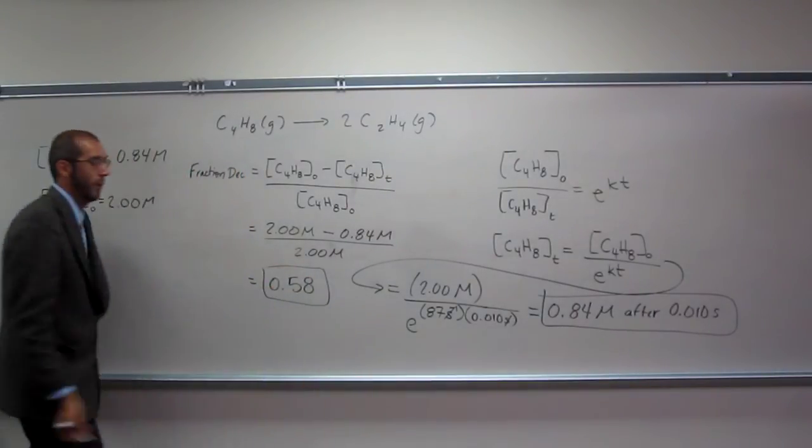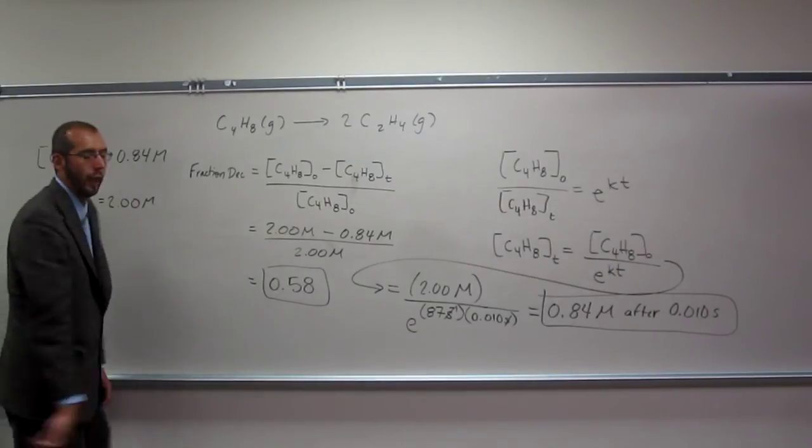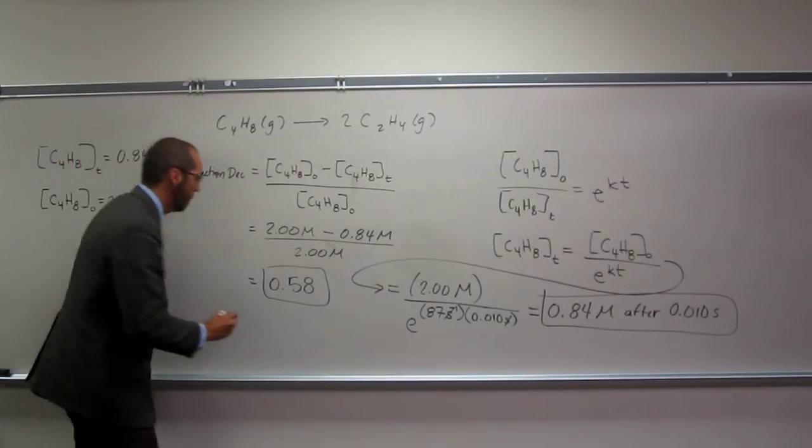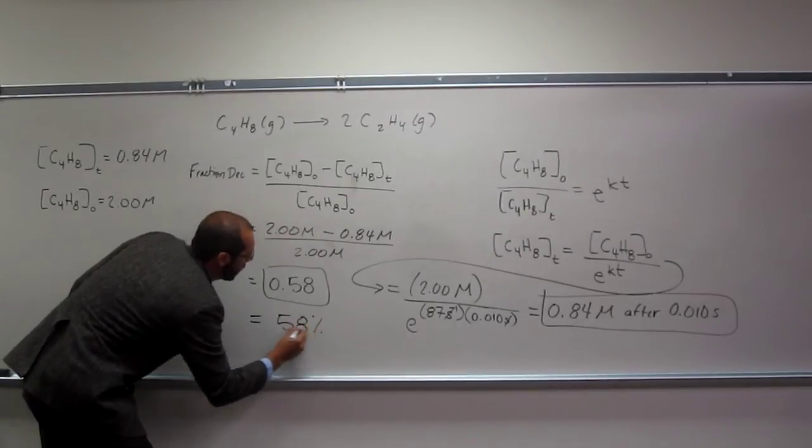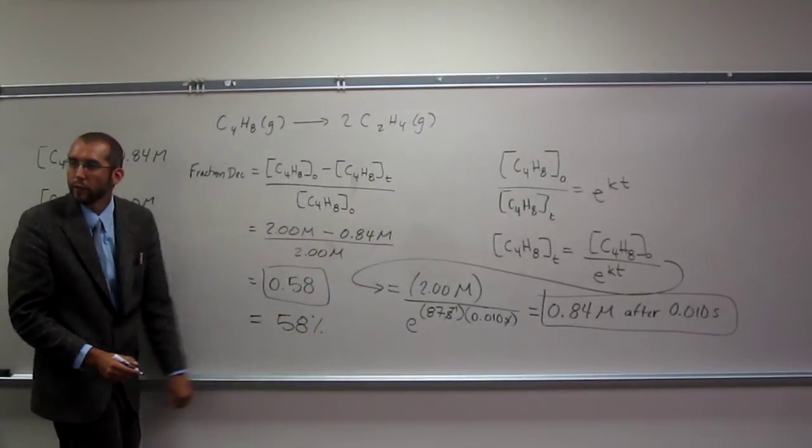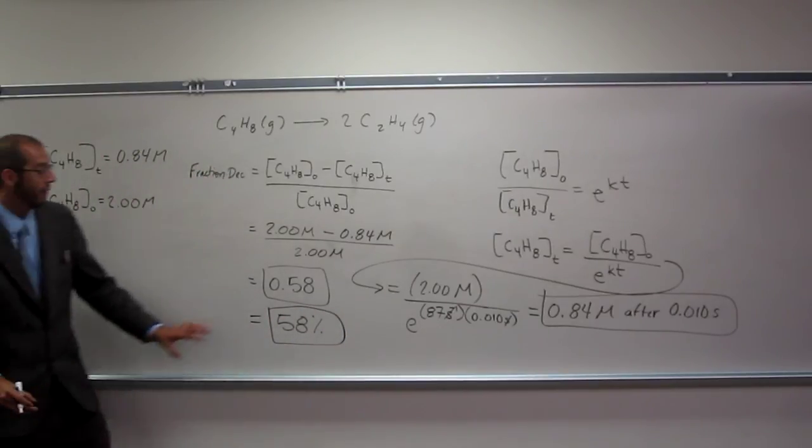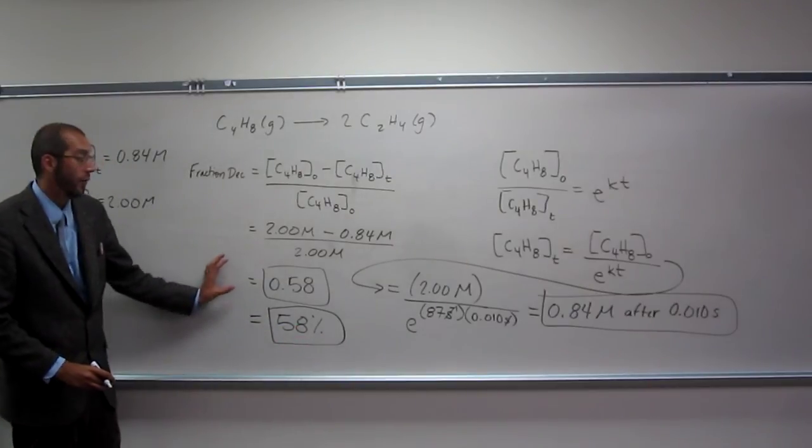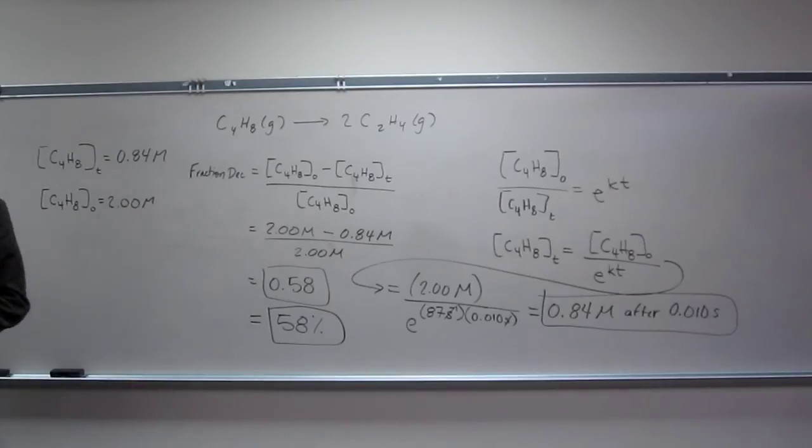What if it asks me, what percentage of decomposed? What do I do then? Multiply by 100%. So, let's say, the percent decomposed. So, the percentage that we have left would be 100 minus that. The fraction that we have left would be 1 minus that. Okay? Everybody okay with doing something like that?